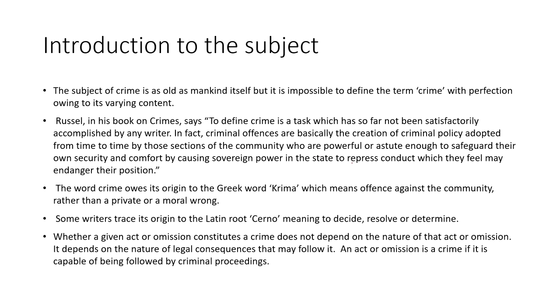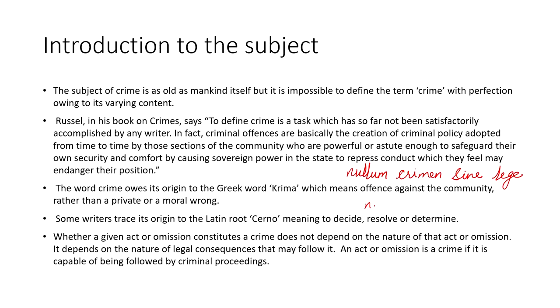There is a Latin maxim which means there cannot be a crime without law — that is, what is something that has been expressly forbidden by the law. Till the time the law does not expressly forbid me to do something, that act is not a crime. Similarly, from this maxim flows another maxim, Nulla poena, which means there cannot be punishment without law. Unless and until I do something which is forbidden by the law, I cannot be punished by the state.